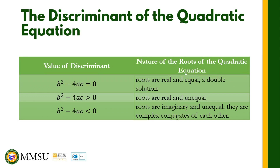The value of b squared minus 4ac determines the nature of the roots, as shown in the table. If b squared minus 4ac equals zero, the roots are real and equal — we call it the double solution. If b squared minus 4ac is greater than zero, the roots are real and unequal. If the discriminant is less than zero, the roots are imaginary or complex numbers and unequal — they are complex conjugates of each other.